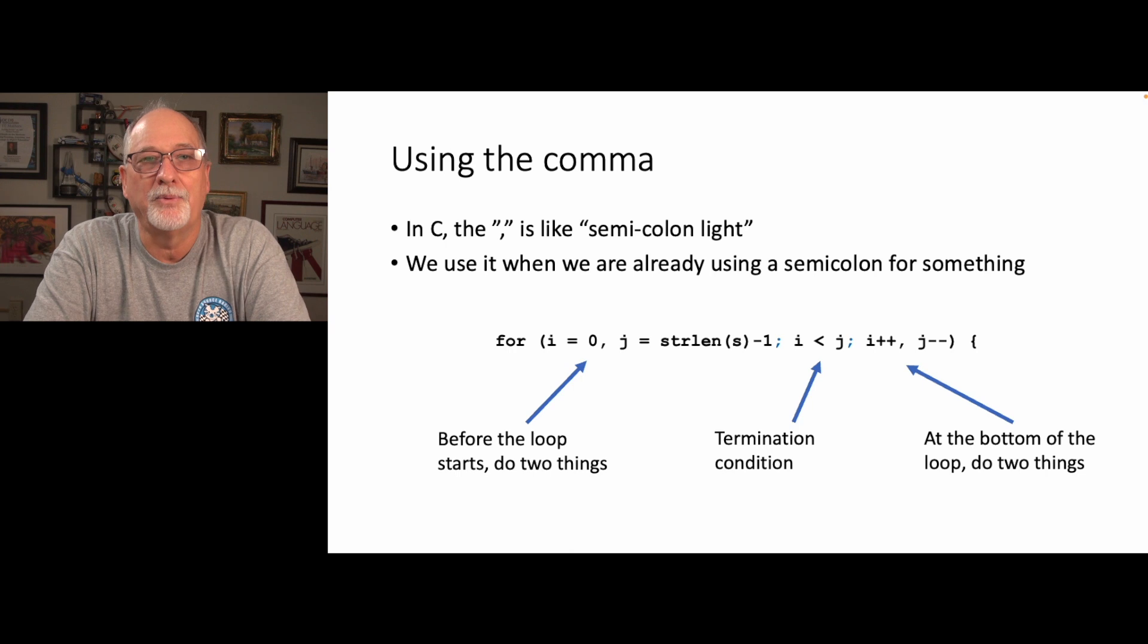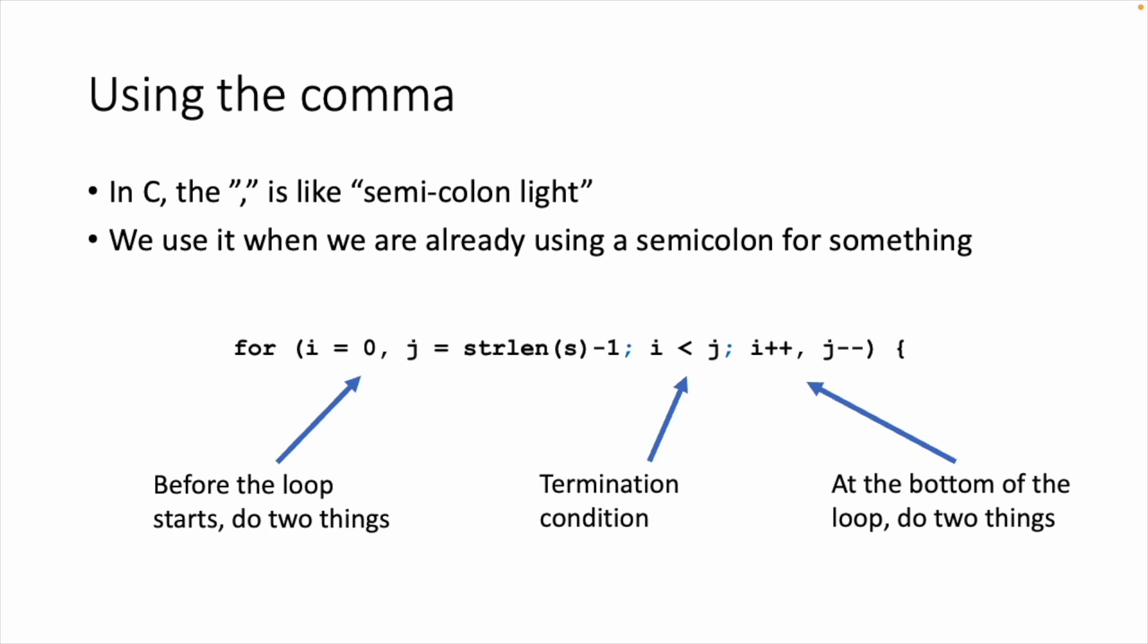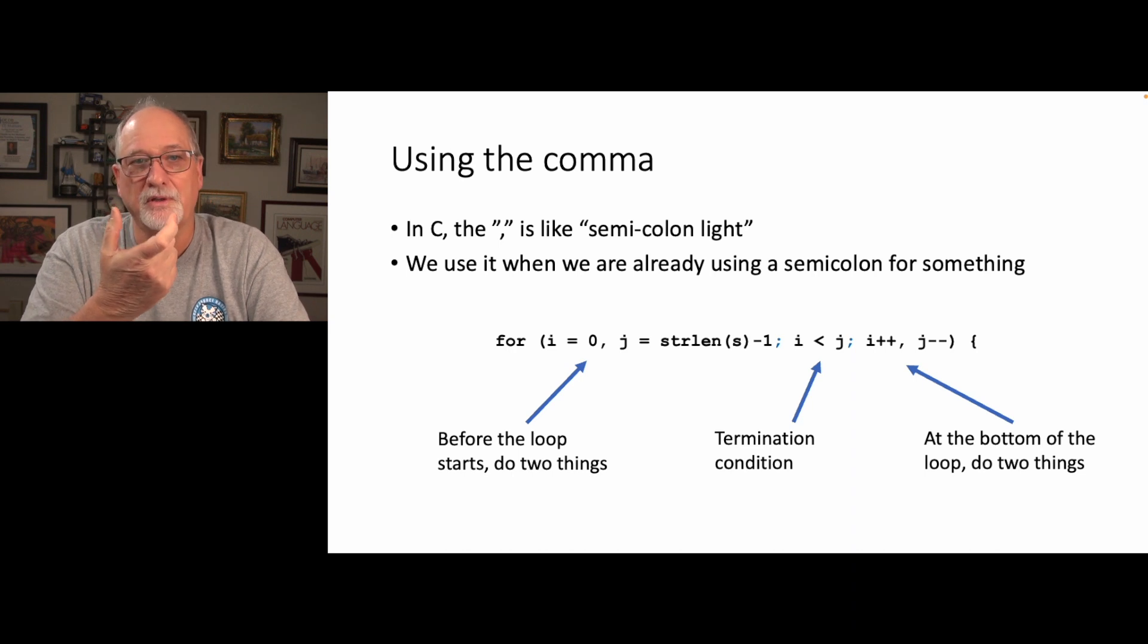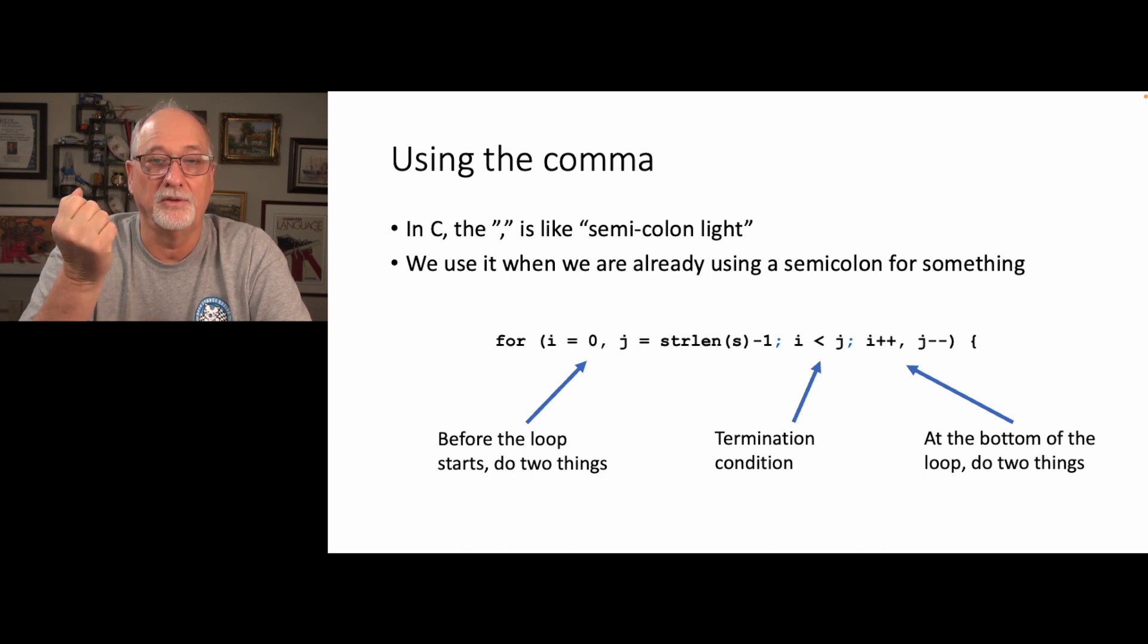The comma operator or comma separator, I like to think of it as like a light version of the semicolon. And most people almost never use it. And the only place we use it is when it is idiomatic, where in a for statement, because we're already using semicolon to separate the start before the loop, the loop test, and then the loop increment per iteration. We're using semicolon for that.